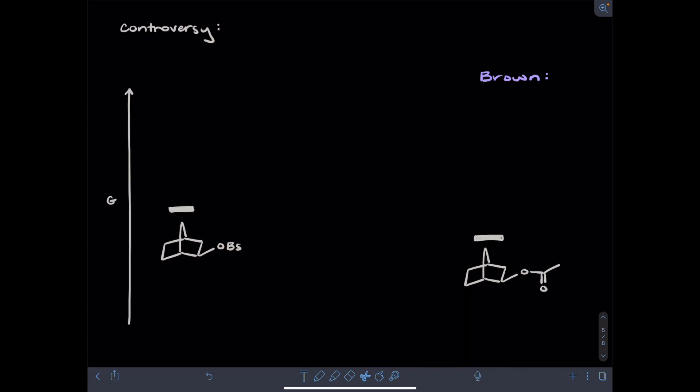So if we looked at the difference in opinions on reaction coordinate diagrams, let's first consider Brown's perspective. That classical carbocations are created, and then they undergo rearrangement quickly. Here I've drawn the norbornyl starting material, and I'm putting the substitution product slightly lower in energy, just assuming that this reaction is slightly exergonic, because it does occur.